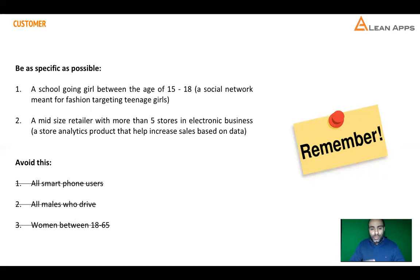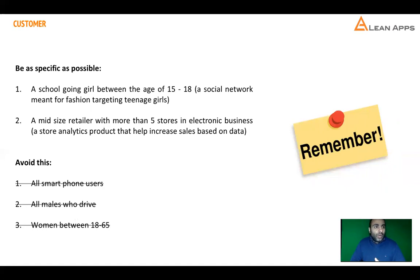Narrow it down by gender, age group, and if possible, location — whether they're in the US, Berlin, or wherever. Try to specify location, age group, and gender as much as possible. For another example, if there is a retail store analytics product that helps increase sales, I would start by targeting a mid-size retailer with more than five stores, and further narrow it down to one selling electronics like laptops, fridges, air conditioners, and phones — a very specific business segment.